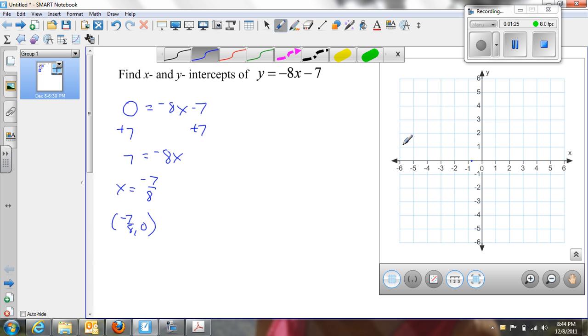Let's find the y-intercept. I have y = -8(0) - 7, because where x is 0 is where my y-intercept is. So y = -7.